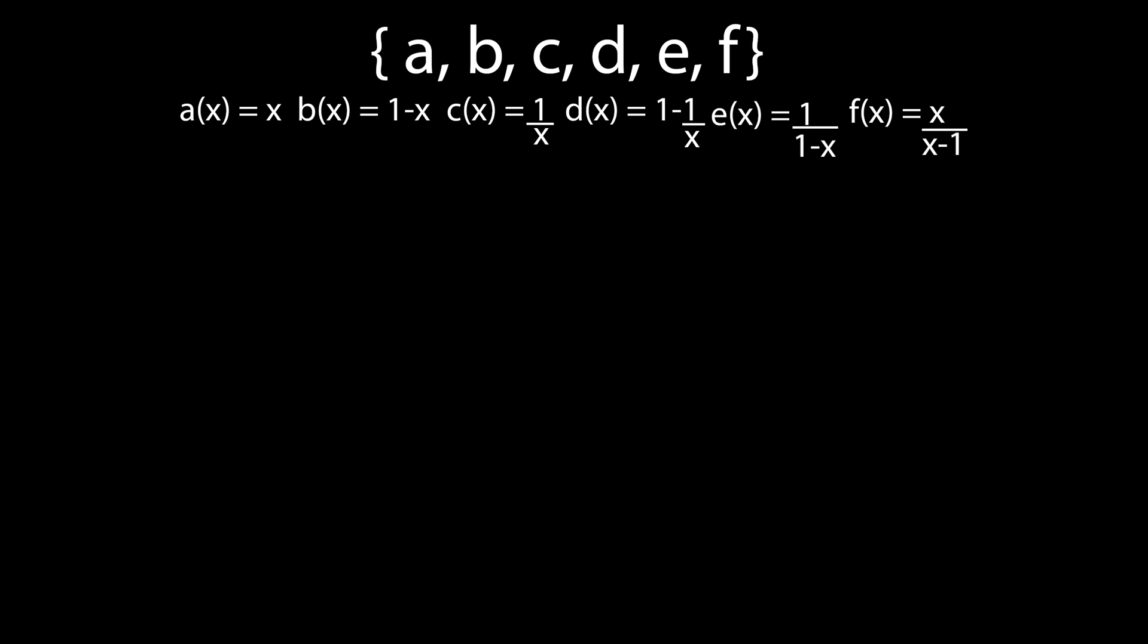Like if my set contains some functions, and my binary operation took two functions and made their composite, which is also in the set. It's important to remember that binary operations are not always commutative. This means that A.B is not always equal to B.A. A good example of this is matrix multiplication.